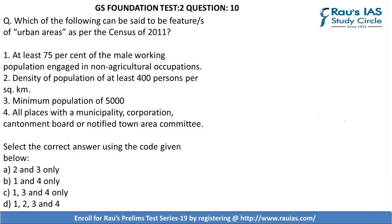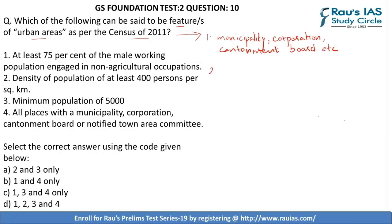Question 10 asks about features of urban areas as per the Census of 2011. As per the Census of 2011, the definition of an urban area is: firstly, all places which have a municipality, corporation, cantonment board, etc. Second, all places which satisfy the following criteria — at least 75% of the male population should be engaged in non-agricultural pursuits. Third, a population density of minimum 400 persons per square kilometer.